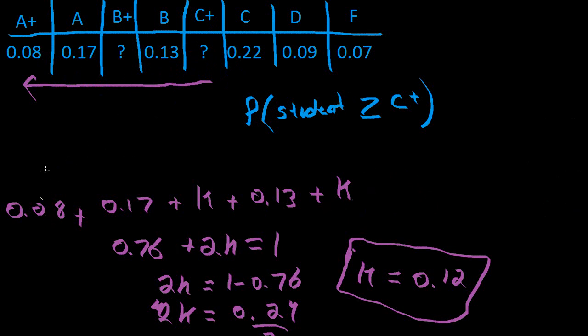So the addition of 0.08, which is A plus, and 0.17, which is just a letter A in general, and then K, which is unknown...